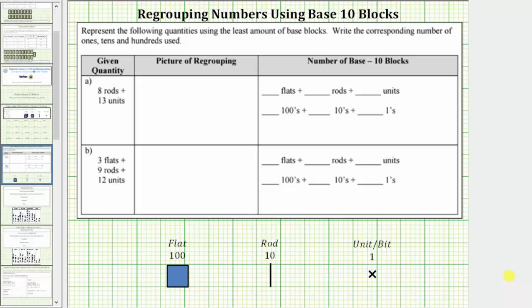Welcome to two examples on regrouping numbers using base 10 blocks. We're asked to represent the following quantities using the least amount of base 10 blocks by the corresponding number of ones, tens, and hundreds used.